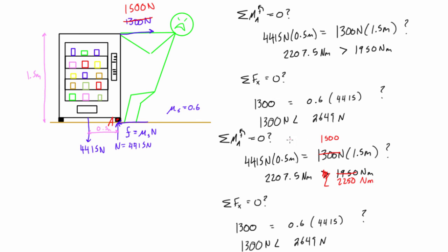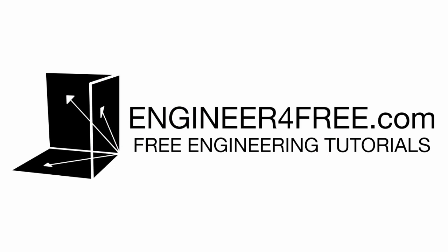For the slip check with 1500 newtons: 1500 is still smaller than 2649, so the vending machine would still not slip — it would just tip and fall on him. But pulling at 1300 newtons in the same orientation, it wouldn't move at all. Hopefully that clears up an example of using friction and moments together in the same problem.